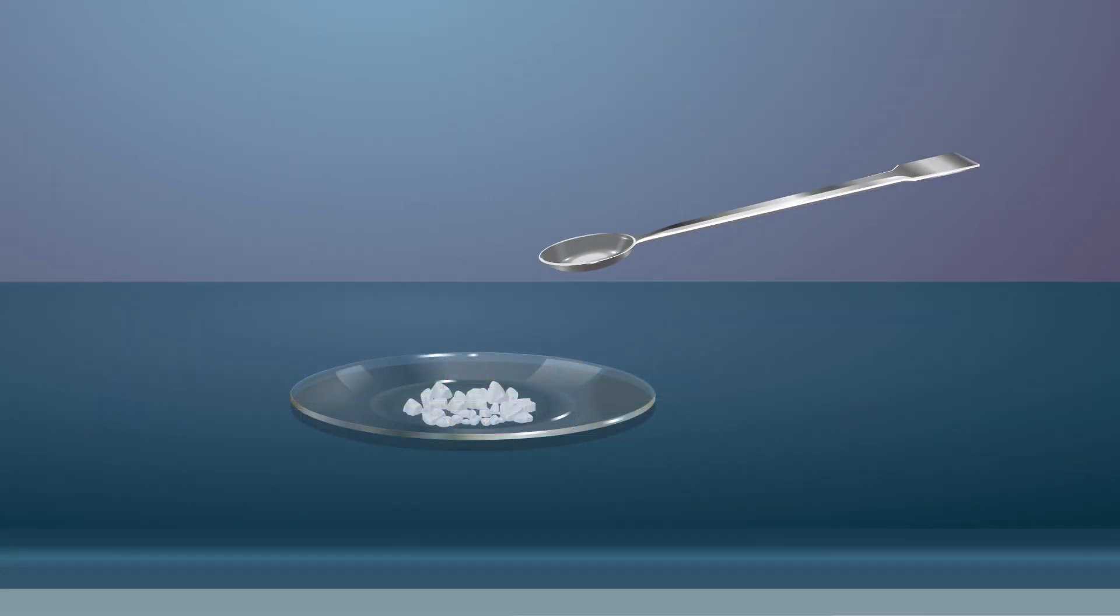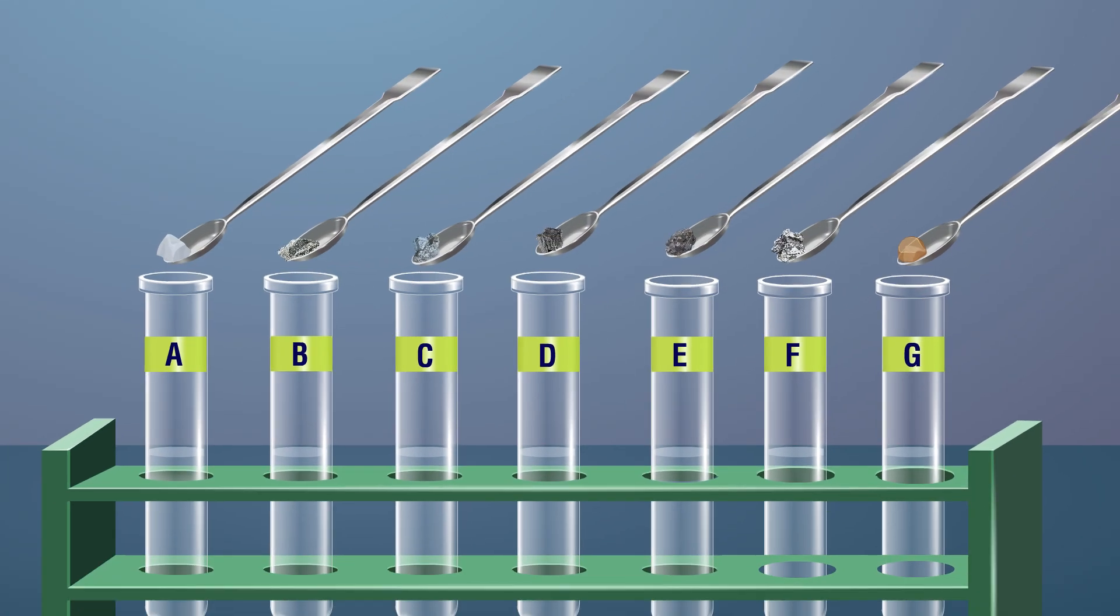Add a small amount of clean metallic samples of sodium, magnesium, zinc, lead, iron, aluminium, and copper in each test tube and observe the reaction.